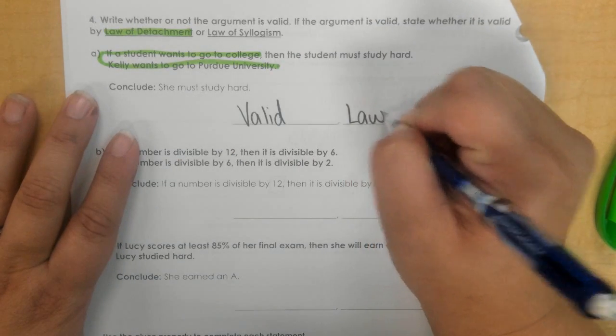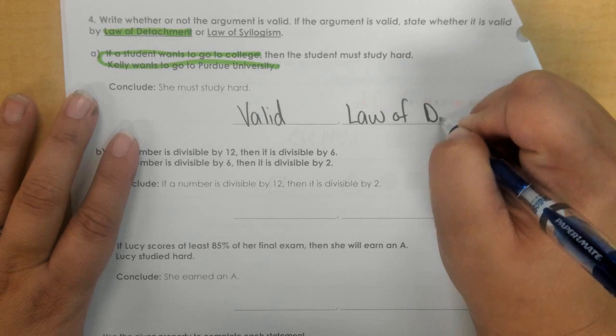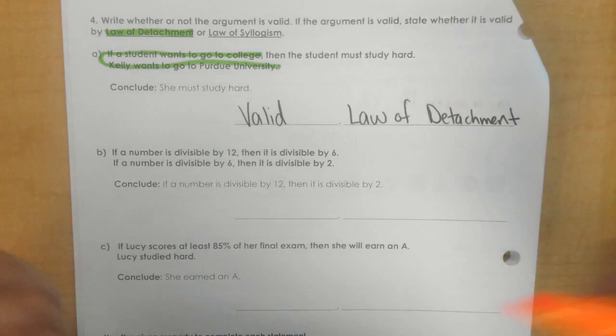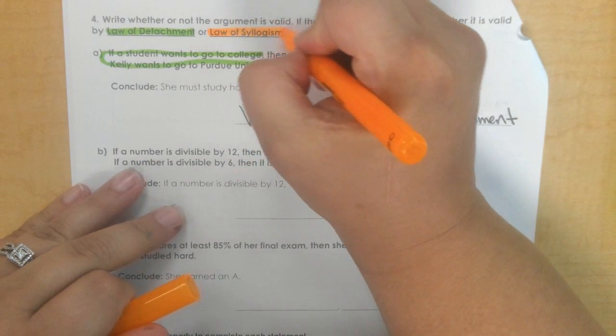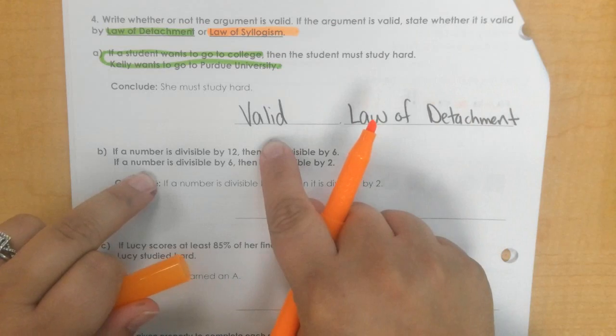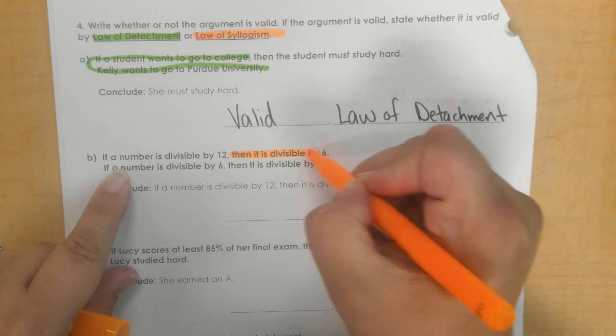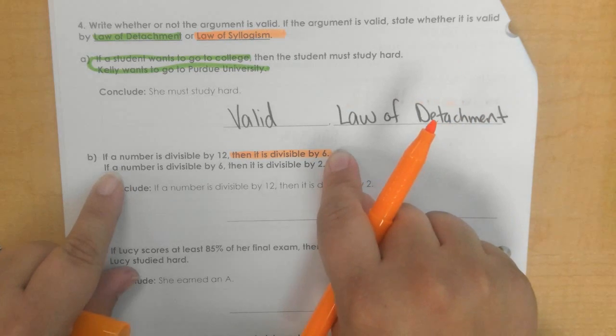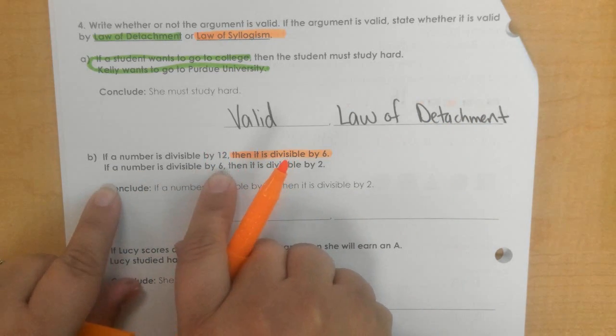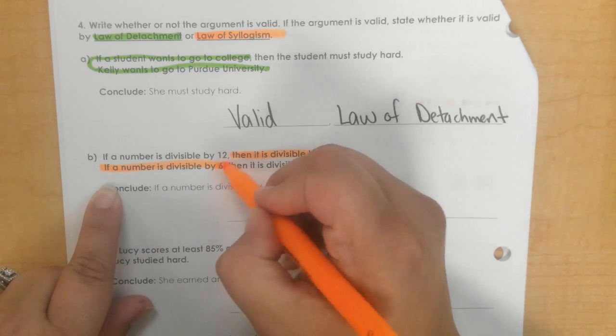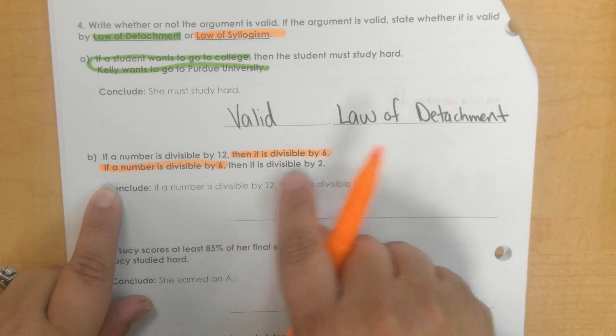That is the law of detachment. Okay, for the law of syllogism, we need my then and my if to be the same. So if a number is divisible by 12, then it is divisible by six. If a number is divisible by six, okay, so that's true, that's the same. Then it is divisible by two.